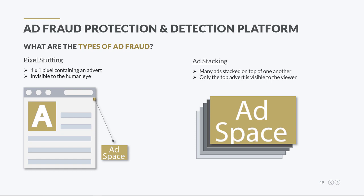Ad stacking occurs when multiple ads are stacked on top of one another, with only the top ad being visible to the viewer. Even though the rest of the ads are invisible to humans, their impressions are still considered valid. Advertisers have to pay for such impressions. Again, this method is used by dishonest publishers to increase their ad revenues.